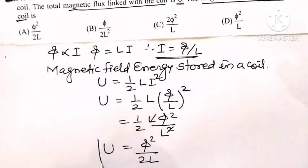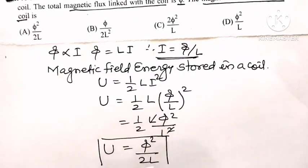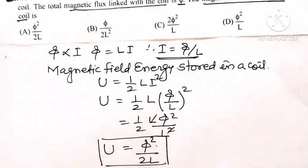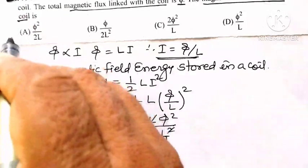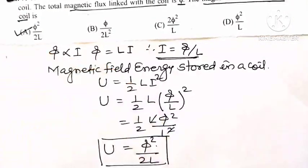So the magnetic field energy stored in a coil is phi squared upon 2L. Out of the 4 options, option A is phi squared upon 2L, so option A is the correct option for this question.